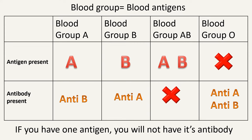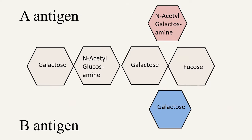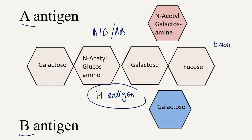Blood group O individuals have H antigen, so why is the discussion only about A and B antigens and their particular antibodies? H antigen does not really trigger an immune response. As you can remember from the structure, it is the basic structure for both A and B antigen. So individuals having A, B, or AB blood group do not see H antigen as something foreign. Thus there is no immune response against the H antigen, and for blood typing we only use antibodies against A and B antigens.